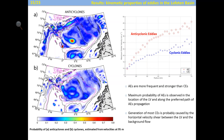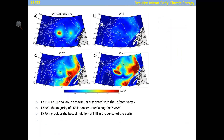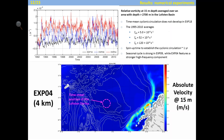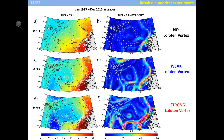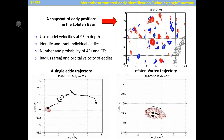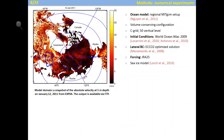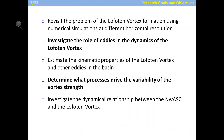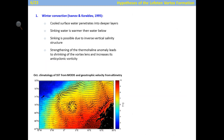An audience member asks how the vortex location relates to where deep water formation occurs. The speaker explains that traditionally deep water formation takes place in the Greenland Basin, which is a neighboring region to the Lofoten Basin, separated by the Mohn Ridge at about 2000 meters depth. How important the processes in the Lofoten Vortex are for deep water formation remains an open question and active area of research.